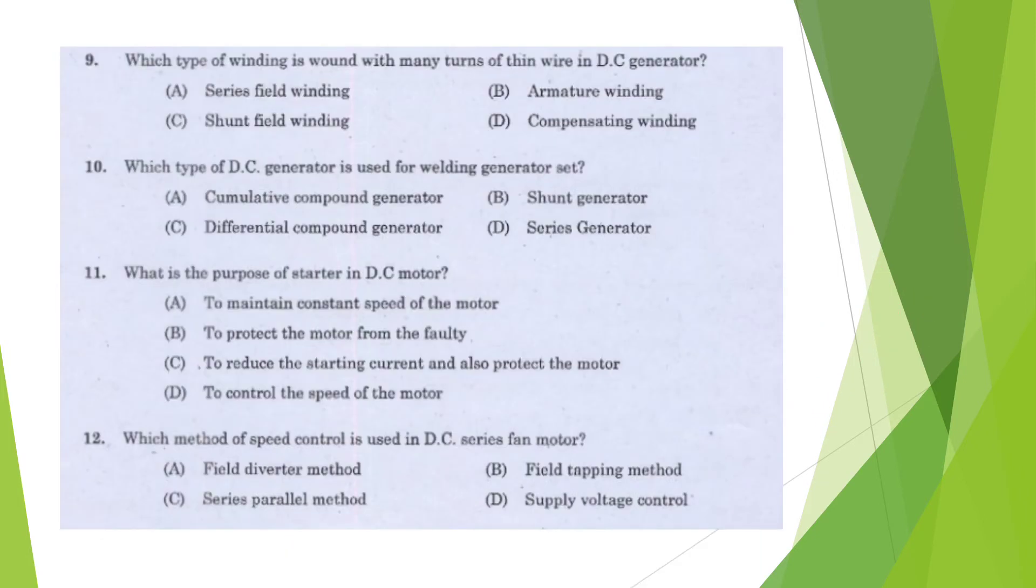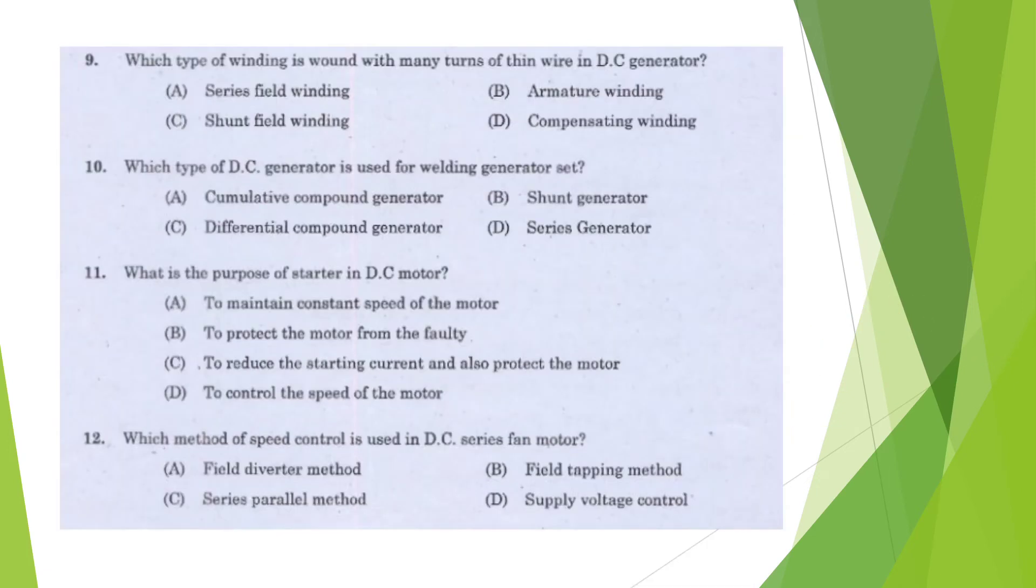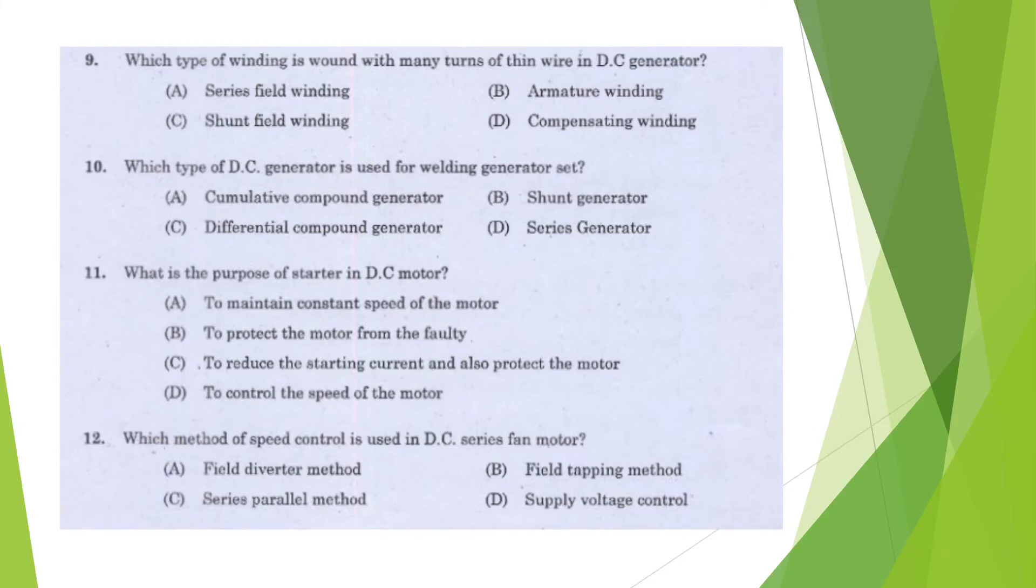Question 10: Which type of winding is wound with many turns of thin wires in DC generator? Series field winding, armature winding, shunt field winding, or compensating winding? Option C, shunt field winding.